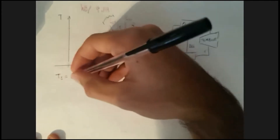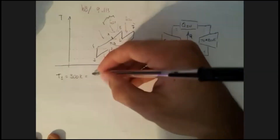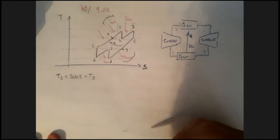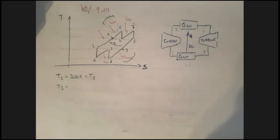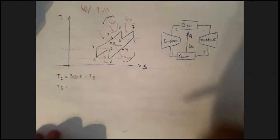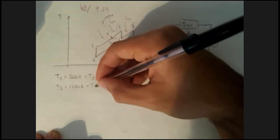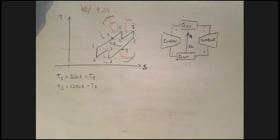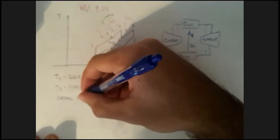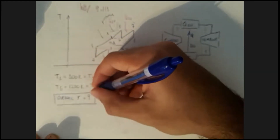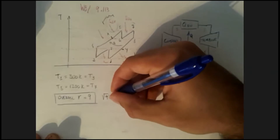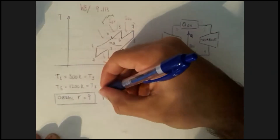T1, the inlet of the first compressor, is 300 K, which means T3 is also 300 K. T5, the inlet of each turbine stage, is 1200 K, so T7 is also 1200 K. The overall pressure ratio is 9. With two compressors and two turbines, the individual pressure ratio for each stage is the square root of 9, which equals 3.